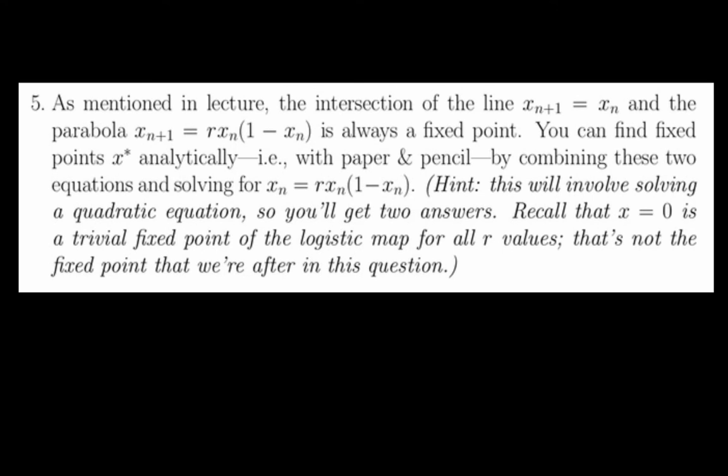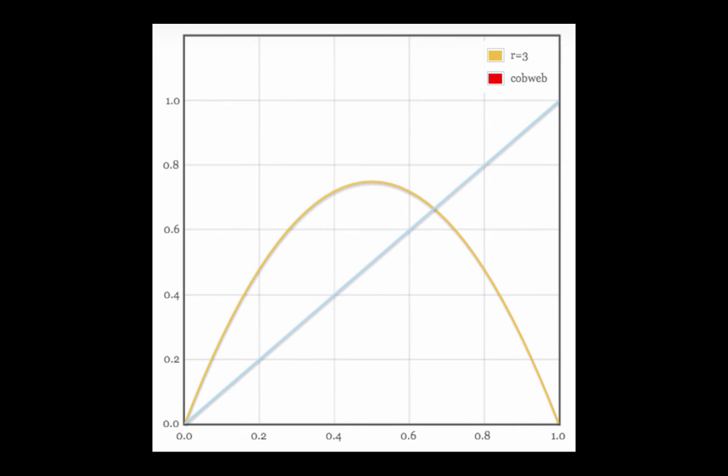Finally, let's look at Question 5. As discussed in lecture, any time there's an intersection between the line xn plus 1 equals xn and the parabola described by the logistic map, which is yellow in this plot, you'll have a fixed-point of the logistic map.